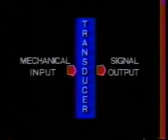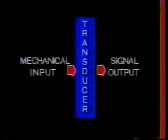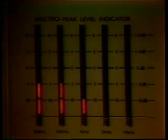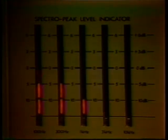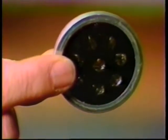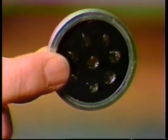Sound waves are mechanical vibrations in the air. A mechanical transducer like a microphone turns these vibrations into a signal that can be monitored and read by a gauge or meter. Mechanical transducers sense mechanical motions and turn them into some kind of signal — usually electrical — which can be represented by a meter or gauge.